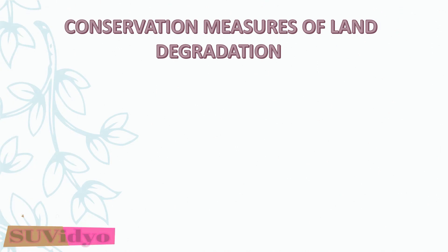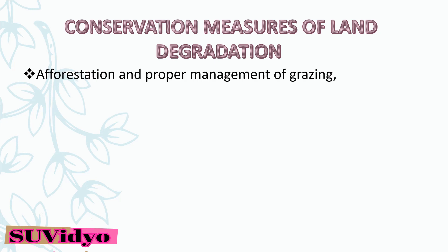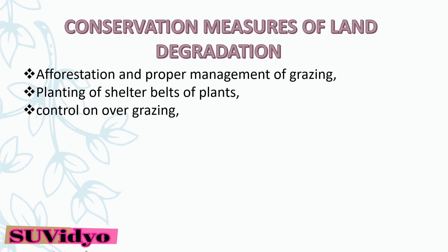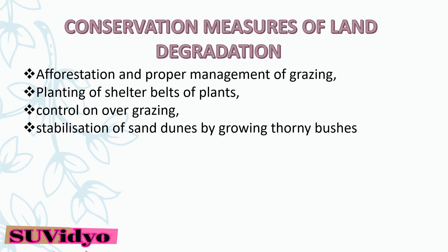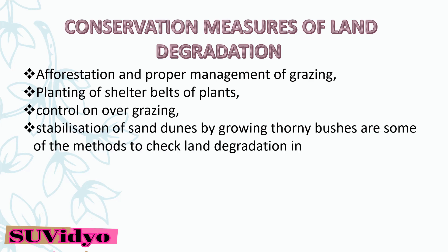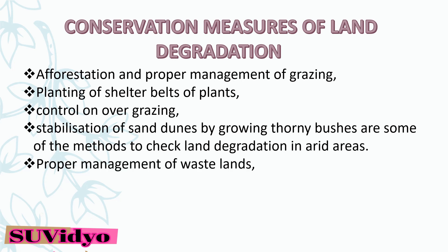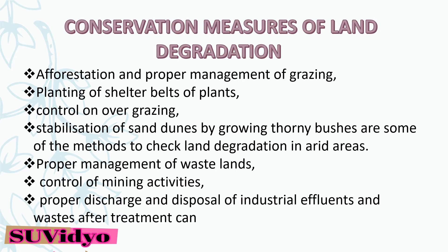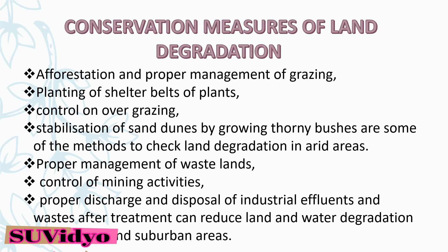An important question that can be asked from the chapter is how land degradation is conserved. Conservation measures include afforestation and proper management of grazing, planting of shelter belts, control on overgrazing, and stabilization of sand dunes by growing thorny bushes in arid areas. Proper management of wastelands, control of mining activities, and proper discharge and disposal of industrial effluents after treatment can reduce land and water degradation in industrial and sub-urban areas.